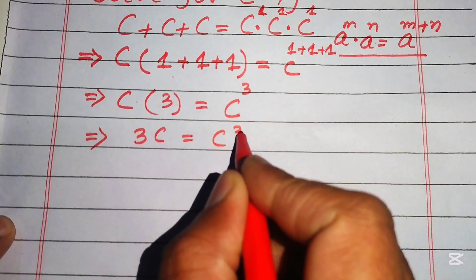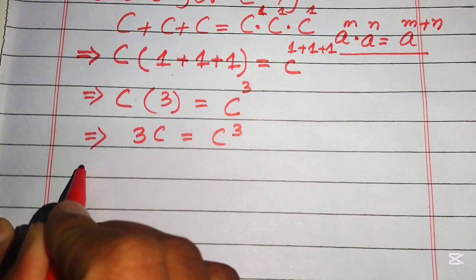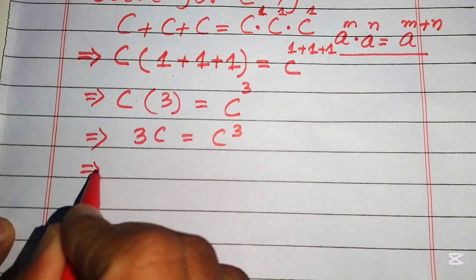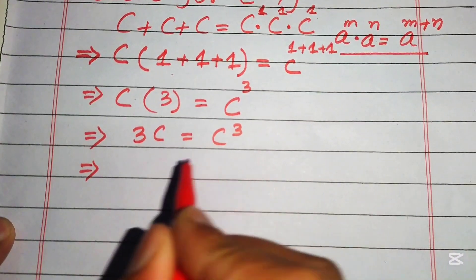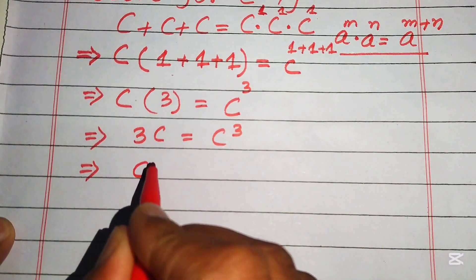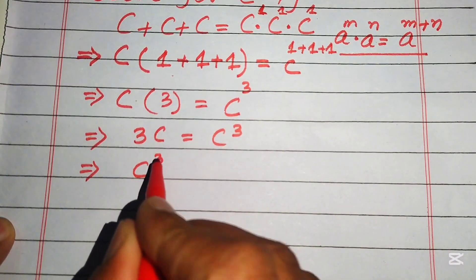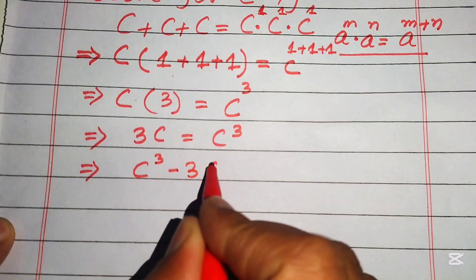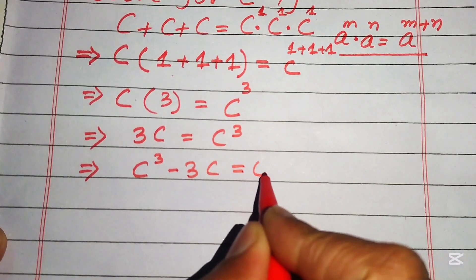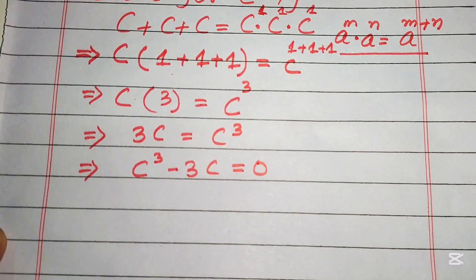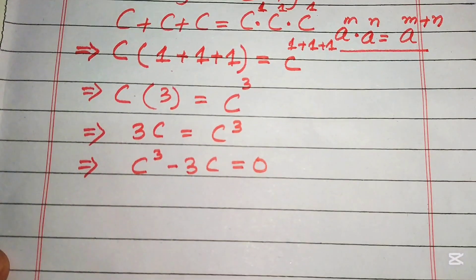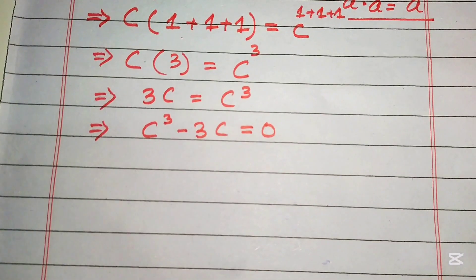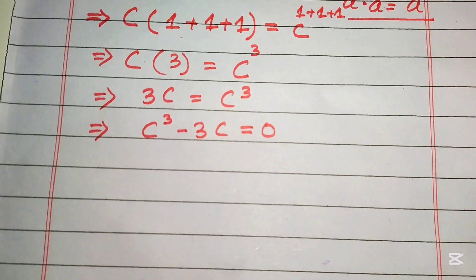We move three c to the right-hand side, giving us c cubed minus three c equals zero.